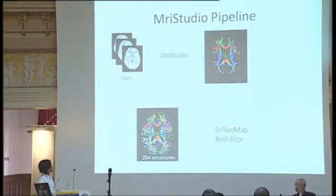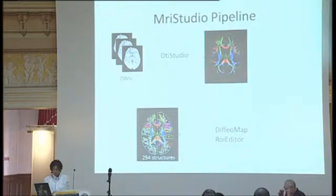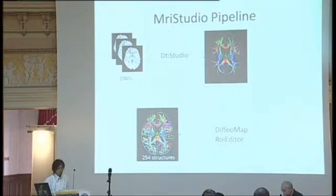DTI Studio transforms the raw diffusion-weighted image into tensor data, and we have two additional modules to automatically parse the image by automatically identifying currently 254 structures in the brain.